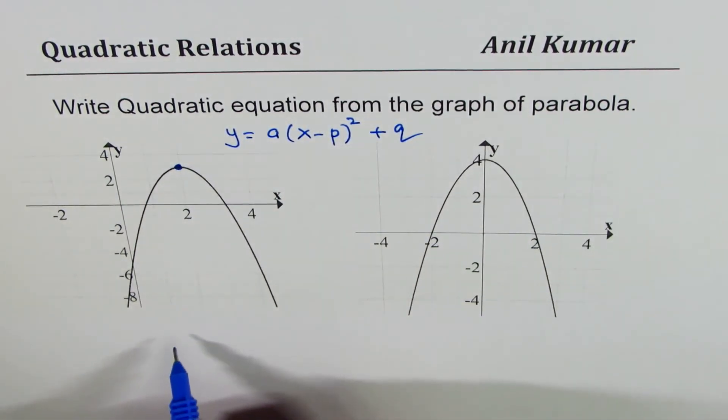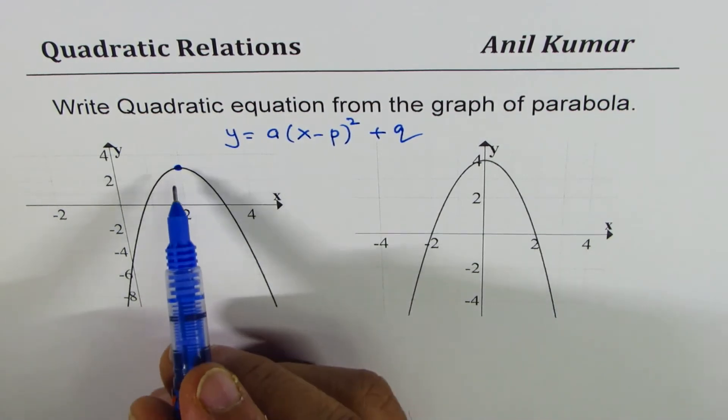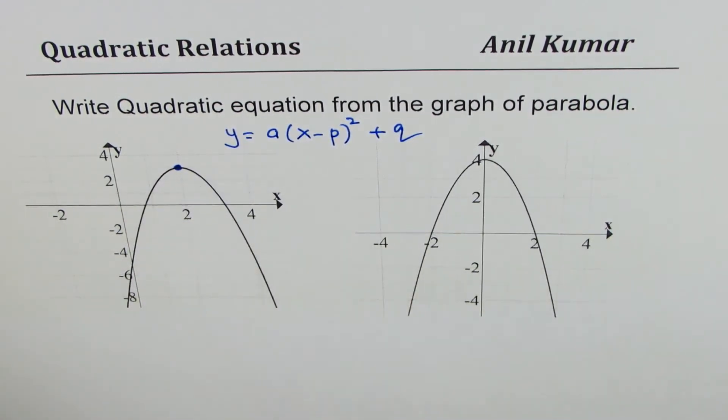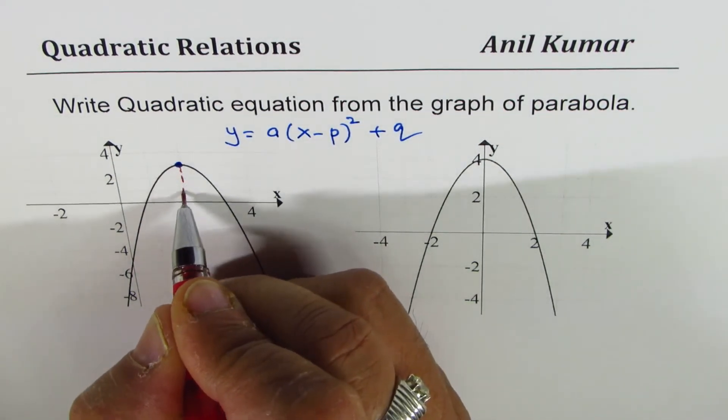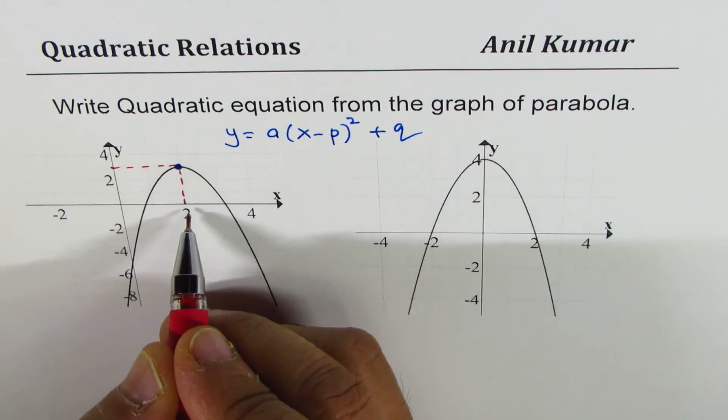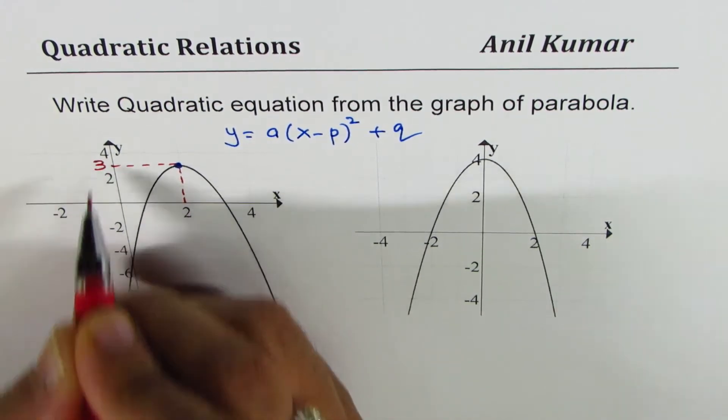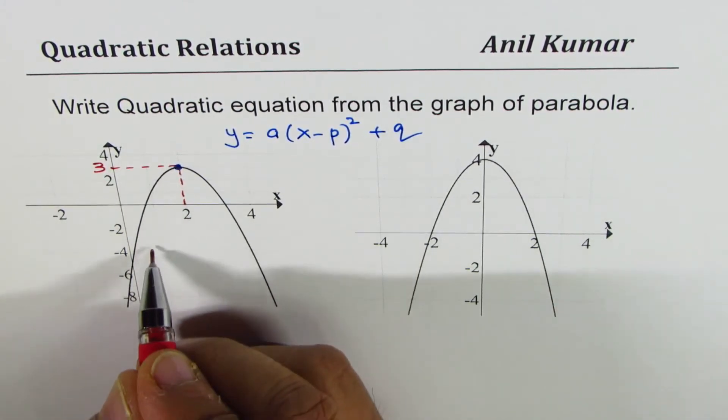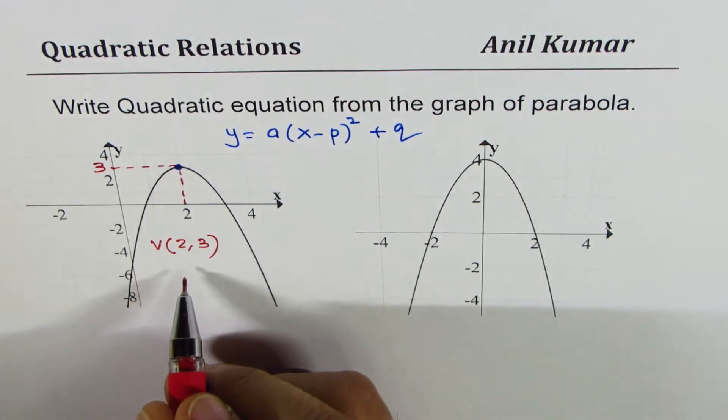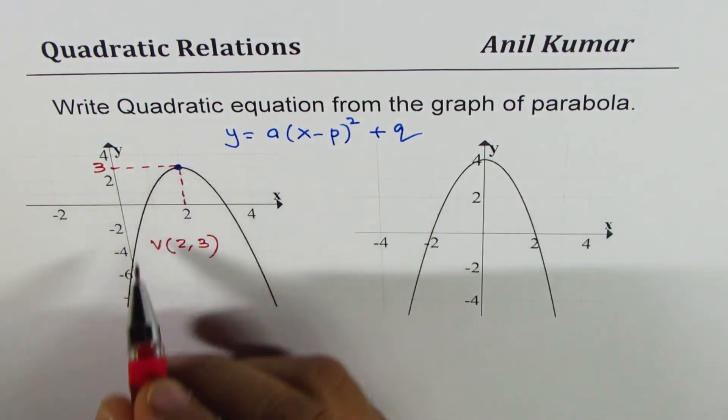First step is to identify the vertex. So let's do case A. The vertex here is at, let's mark it. So this point is at x value of 2, y value of 3. So we can say vertex is at 2, 3. Next thing is we see it is going downwards. That indicates that A is less than 0, A is negative.